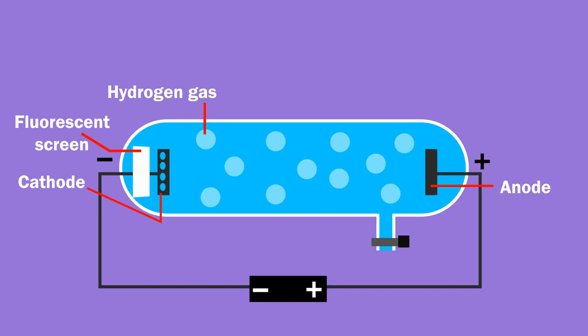At that time, it was already known that hydrogen was the smallest element. When Goldstein applied high voltage, he observed the bright red light behind the perforated cathode.